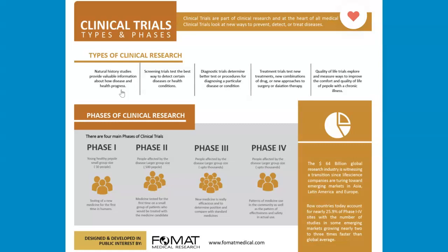Phase three involves people affected by the disease in a larger group — up to thousands — where the new medicine is evaluated for efficacy and compared with standard medicines. Phase four is also in people affected by the disease in larger groups of up to thousands, examining patterns of medicine use in the community and patterns of effectiveness and safety in actual use. Once implemented, this needs to be monitored as well in phase four.